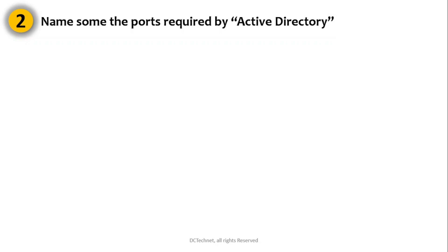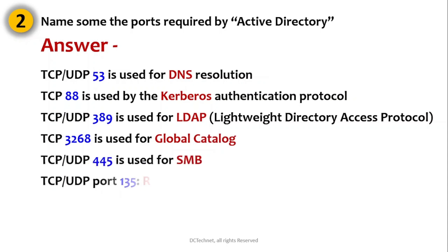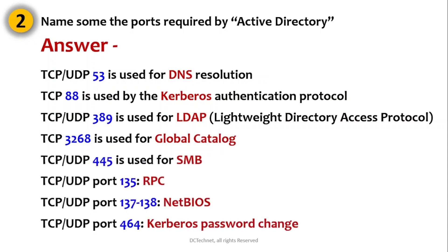Question number two: Name some of the ports required by Active Directory. This is almost always asked in interviews. It's not necessary to know each and every port, but at least four to five ports are mandatory. For example: port 53 for DNS, port 88 for Kerberos, port 389 for LDAP, port 3268 for Global Catalog, port 445 for SMB, and port 135 for Remote Procedure Call.